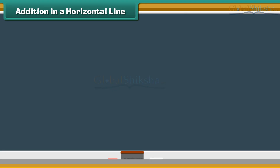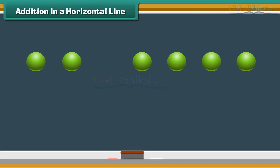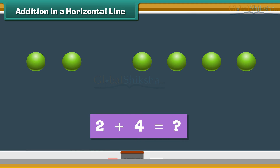Addition in a horizontal line. Let us now use dots to add numbers horizontally. Look at the screen. There are two dots on the left and four dots on the right. What is two plus four? Count the total number of dots on the screen.